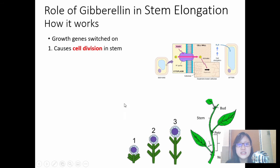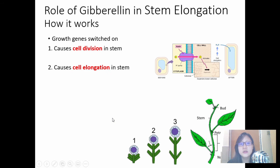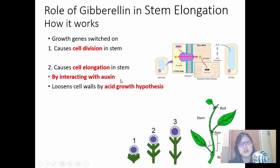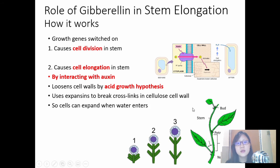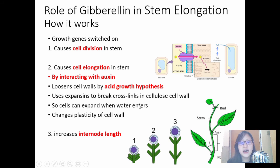When the growth genes are switched on, it causes cell division in the stem. It also causes cell elongation in the stem by interacting with auxin, which uses the acid growth hypothesis to loosen the cell wall and cause cell elongation. It also increases internode length — the distance between one branch and the next — which is quite obvious as the stem elongates.